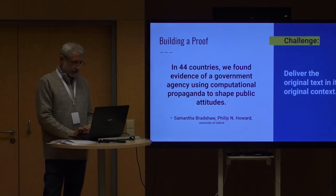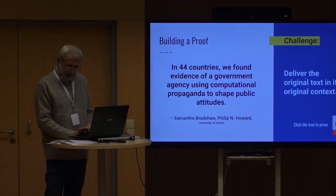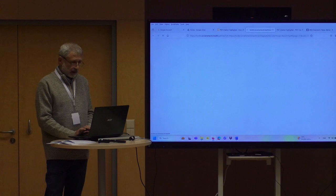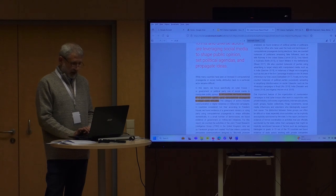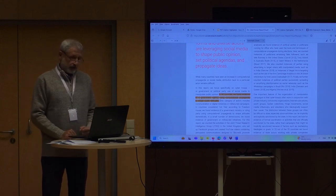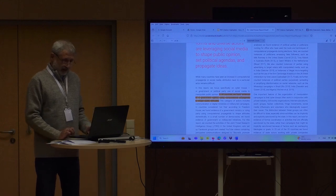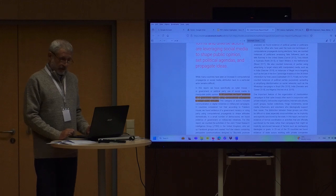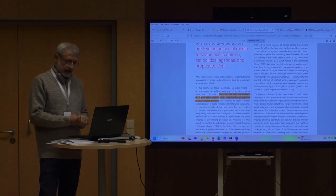For example, we can take the citation: 'In 44 countries we found evidence of government agencies using computational propaganda to shape public attitudes.' And let's verify it against the source — it's as easy as one click. The PDF document opens and you can see the citation we're trying to find is highlighted. So we not only found the original PDF document, but we saved a lot of time looking through it. You can see the PDF citation highlighter in action.